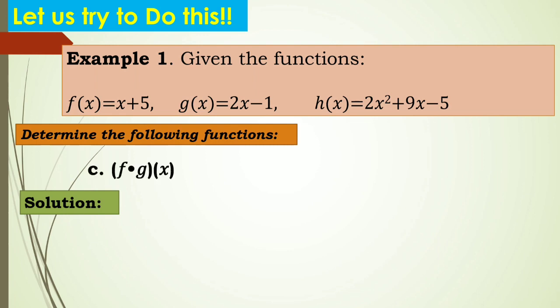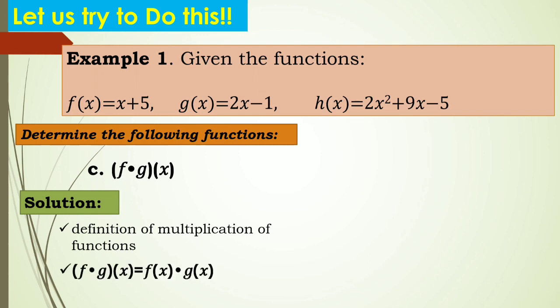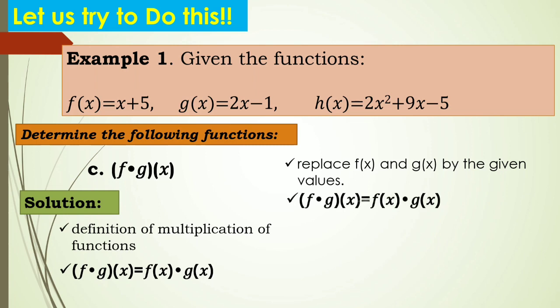How about the product? We have f times g of x. Recall definition number 3: multiplication of functions gives f times g of x equals f of x times g of x. Replace f of x and g of x by the given values. Since f of x is x plus 5 and g of x is 2x minus 1, substitute to get x plus 5 times the quantity 2x minus 1.